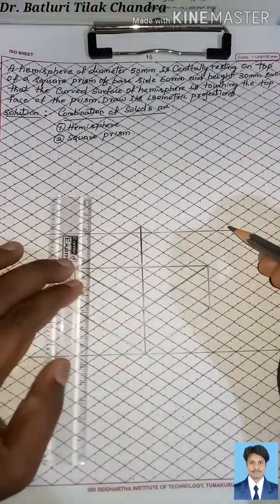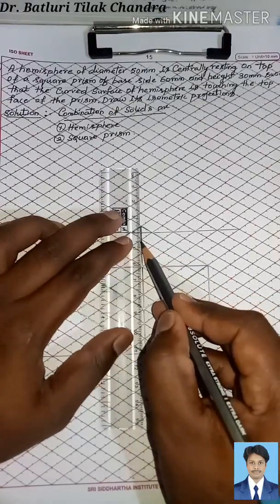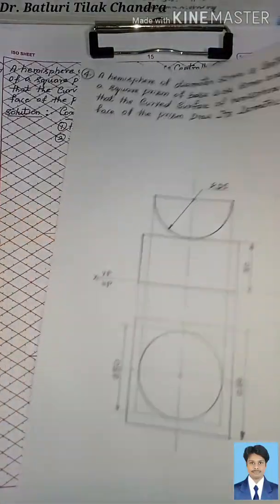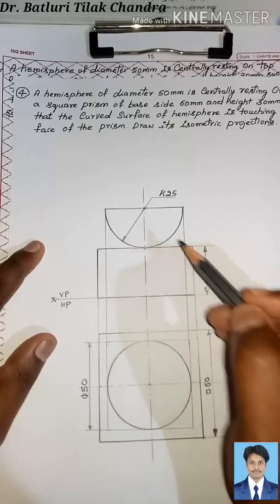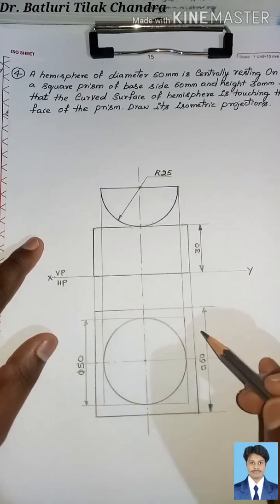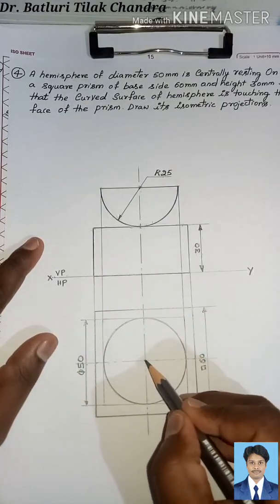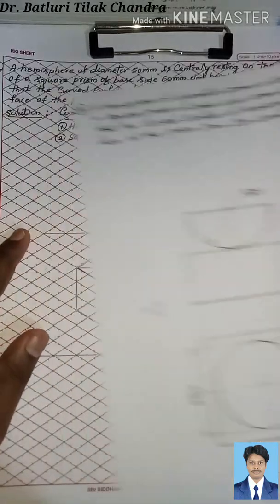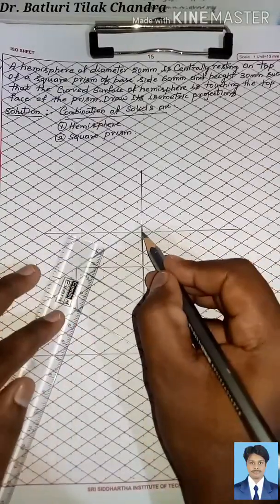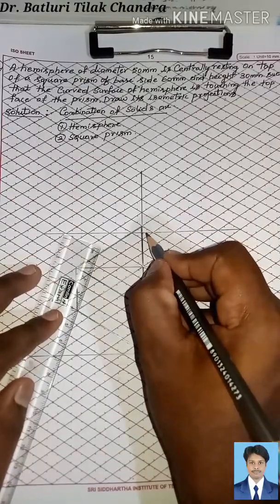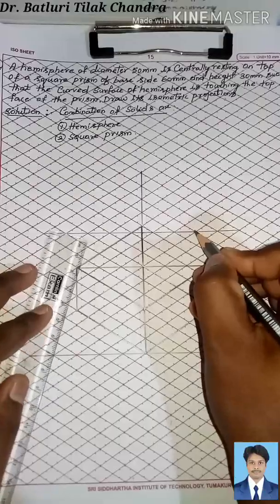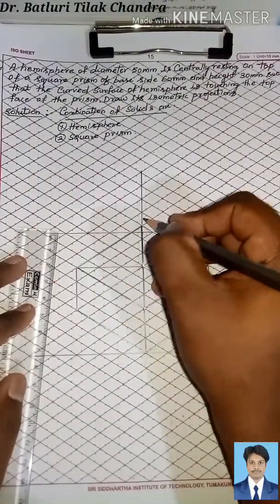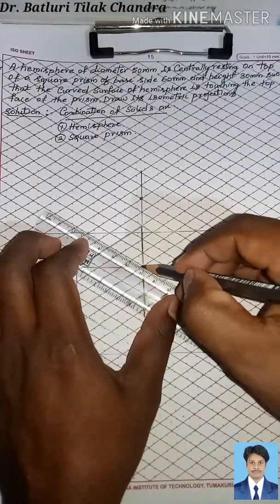Extend the vertical line and draw a horizontal line at the height of 25 mm. From the center, go 25 mm to the right and 25 mm to the left, and also 25 mm up and 25 mm down — that is 2.5 boxes in each direction. Connect these points to form the rhombus needed for the isocircle.